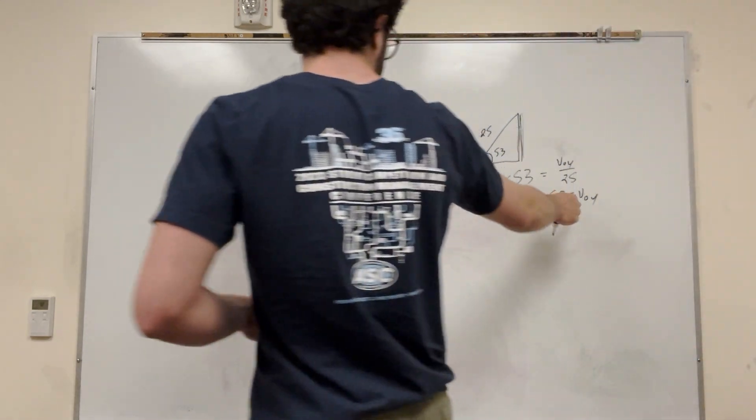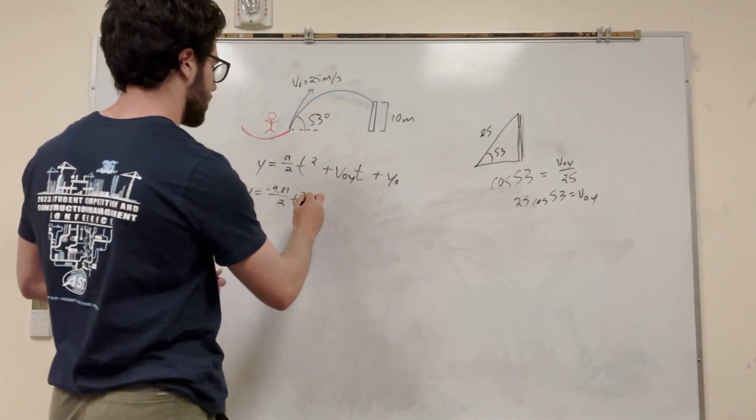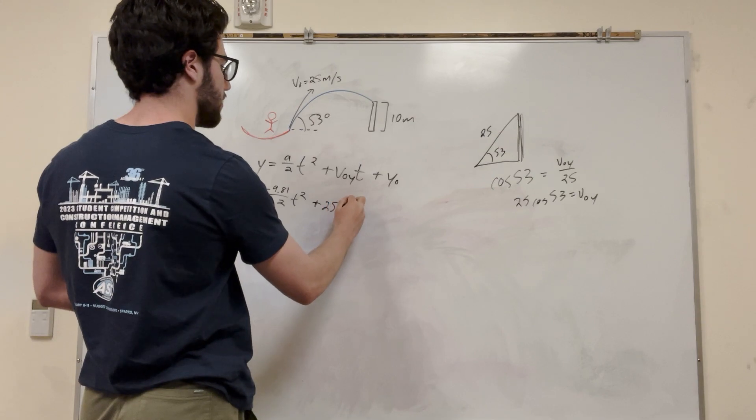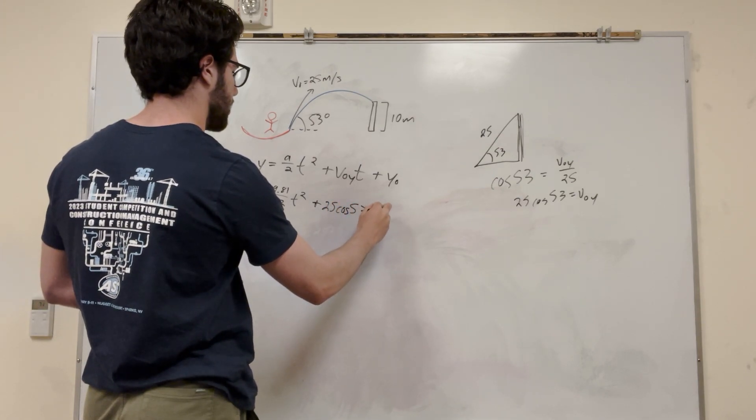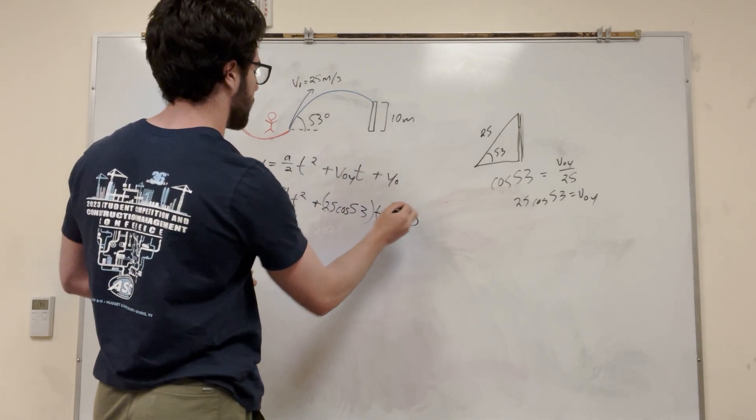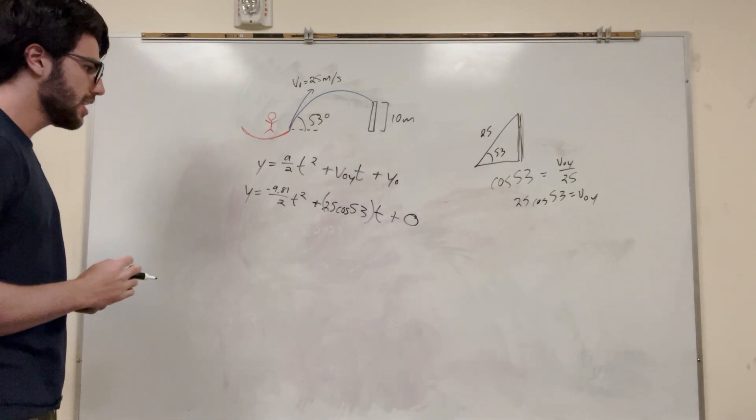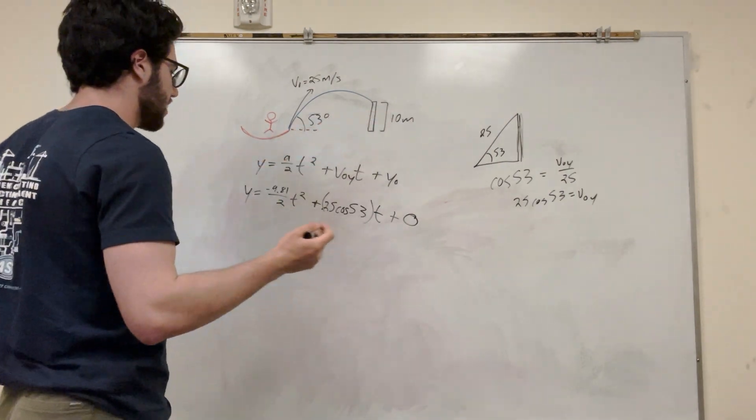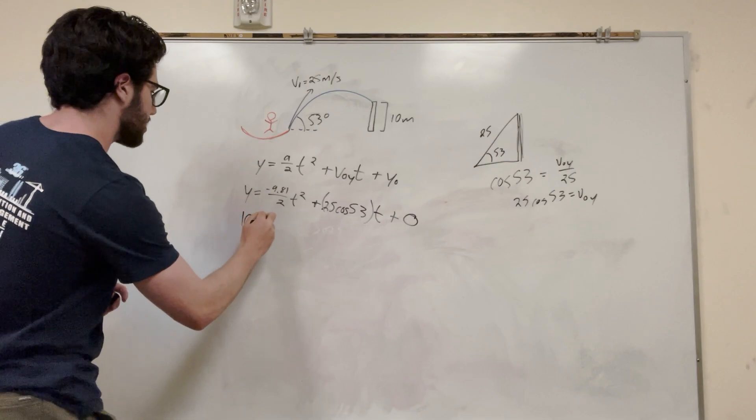So we can basically just substitute v-naught y for this, plus 25 cosine of 53, t, all of that by t. And then plus y-naught is starting at the ground, so 0, perfect. We're trying to find time, so all we have this y here, and we know what this y is, we want it to be 10 meters, right?